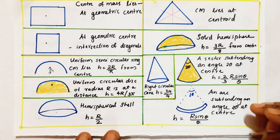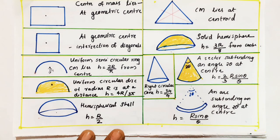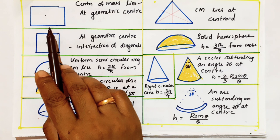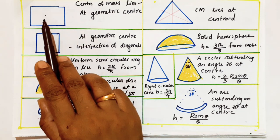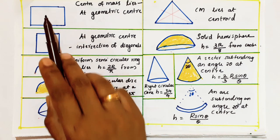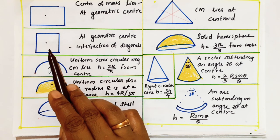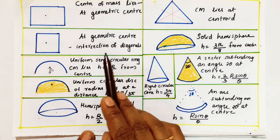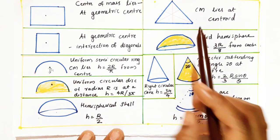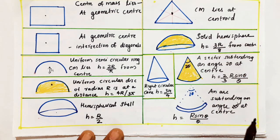Now I am going to give examples of center of mass for few shapes. For a rectangular plane, the center of mass lies at the geometric center — that means the intersection of diagonals. For a square, the center of mass also lies at the geometric center. For a triangle, it is at the intersection of medians, called the centroid.